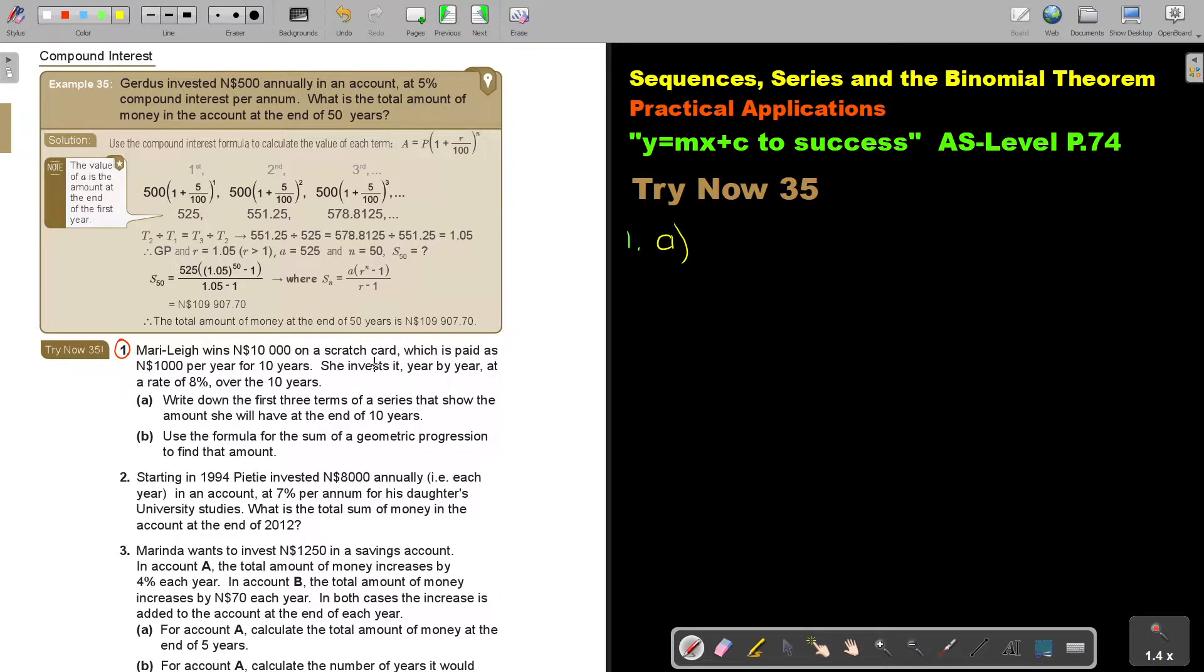Now again, remember I'm going to use the compound formula. What is the compound formula? It's A times 1 plus R over 100 to the power of N. So let's substitute it. I know that it's a thousand. Let's see what is my information. It's a thousand and N is 10. But it's just the first three terms. So I put a thousand, 1 plus the value of R, how many percent is it? It's just 8%. And that will be the first year.